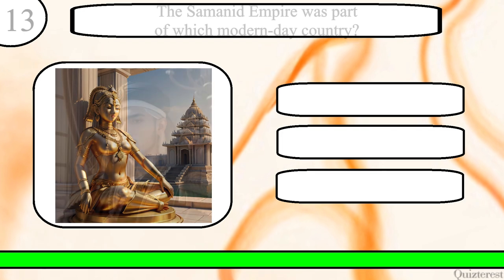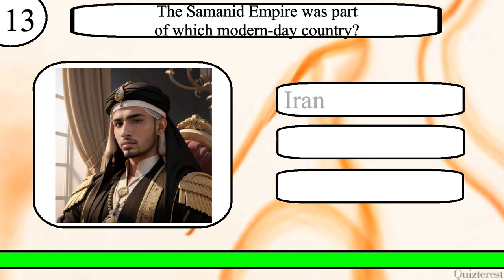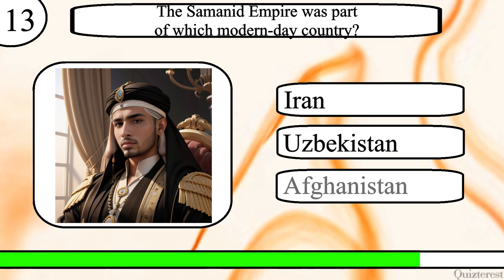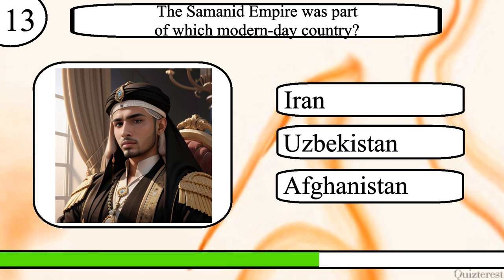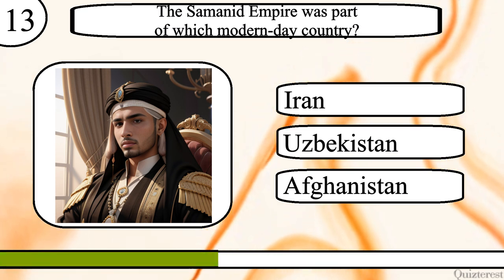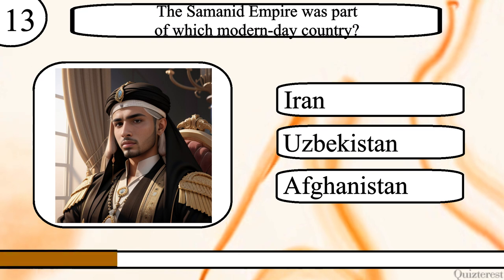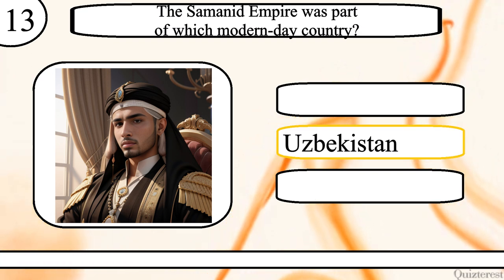Question 13. The Samanid Empire was part of which modern-day country? Iran, Uzbekistan or Afghanistan? The correct answer is Uzbekistan.